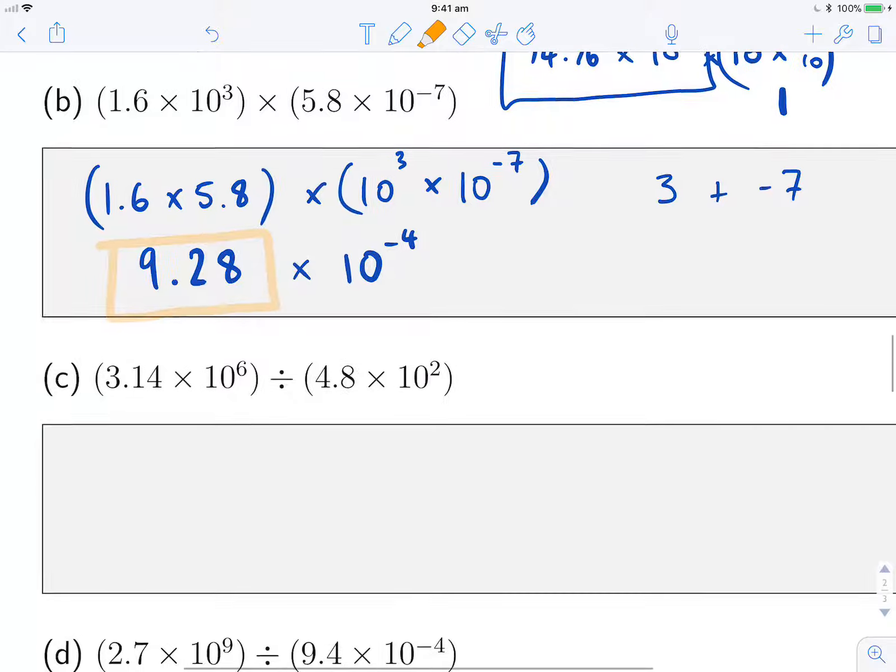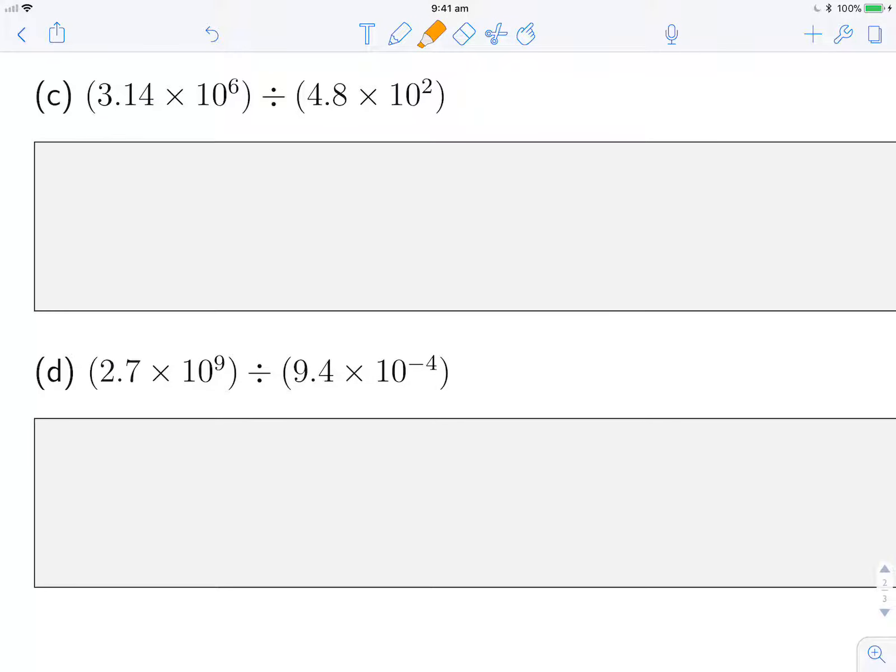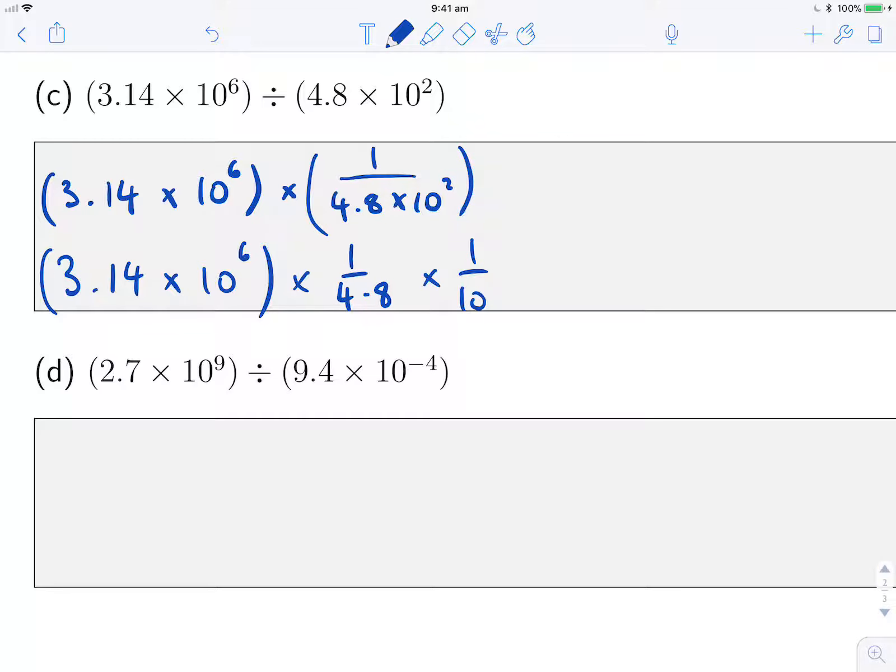Now for division, it's a little bit trickier. I think probably the easiest way to understand how we get to what we do is to think of this in terms of fractions or as multiplying by reciprocals. So think of it as 3.14 times 10 to the 6 times 1 over 4.8 times 10 squared. Once I express this in terms of multiplications, and remember with fractions we multiply the top and multiply the bottom numbers, so I can actually split that bottom one again. So this becomes the same as 1 over 4.8 times 1 over 10 squared.